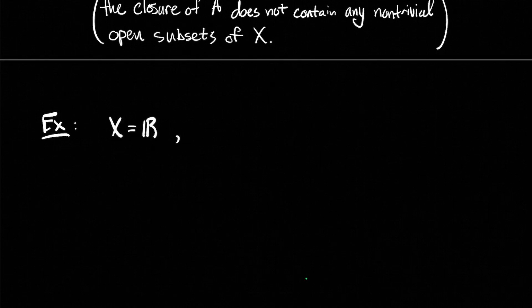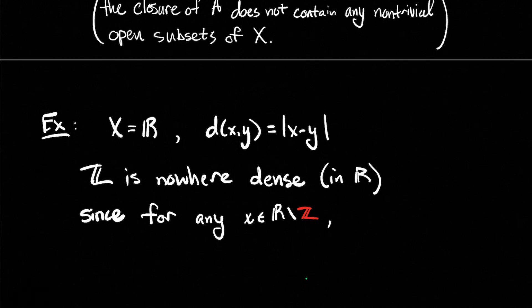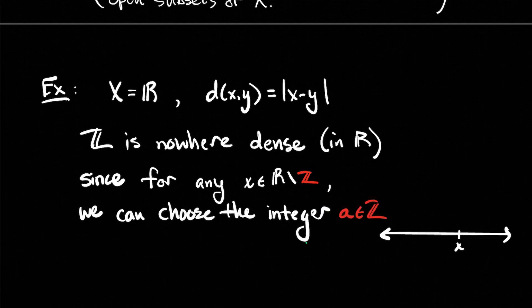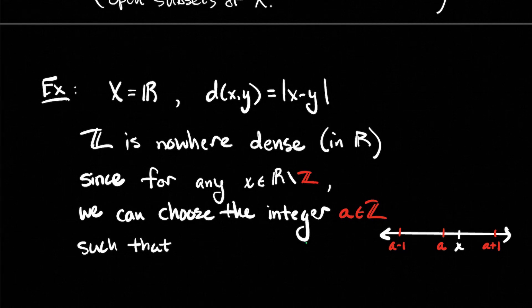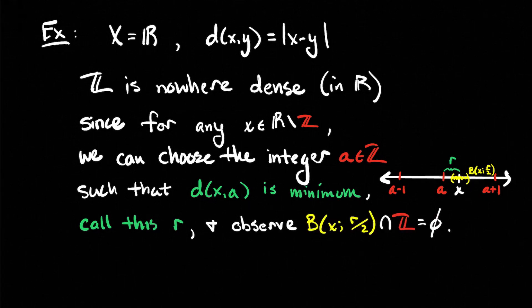The integers form a nowhere dense set of the real numbers. If you take any real number x that is not an integer and find the integer A closest to x — calling that distance r — then we can construct the interval of radius r/2 around x. That interval can't have any integers in it, so the yellow interval has no integers inside of it. That demonstrates that the integers are nowhere dense.